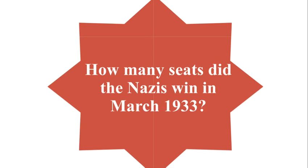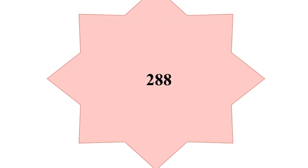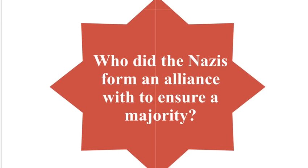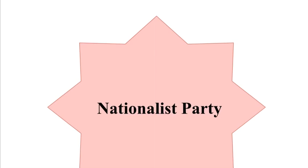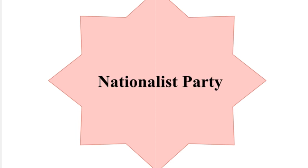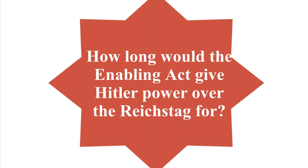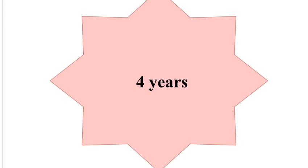How many seats did the Nazis win in March 1933? 283. Who did the Nazis form an alliance with to ensure a majority? The Nationalist Party. How long would the Enabling Act give Hitler power over the Reichstag? A period of 4 years.